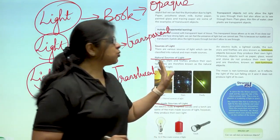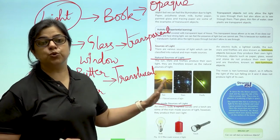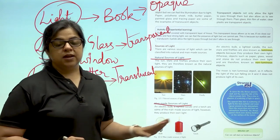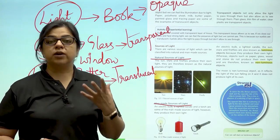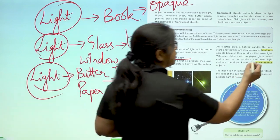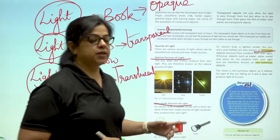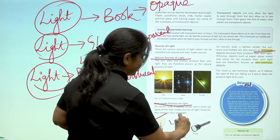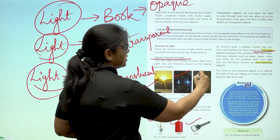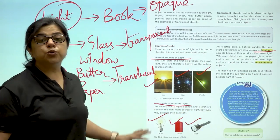So children, all these sources of light help us to see objects. Now all the objects that have got light of their own are known as luminous objects. So a bulb, a candle, a torch, sun, stars, fireflies, these are all luminous objects.